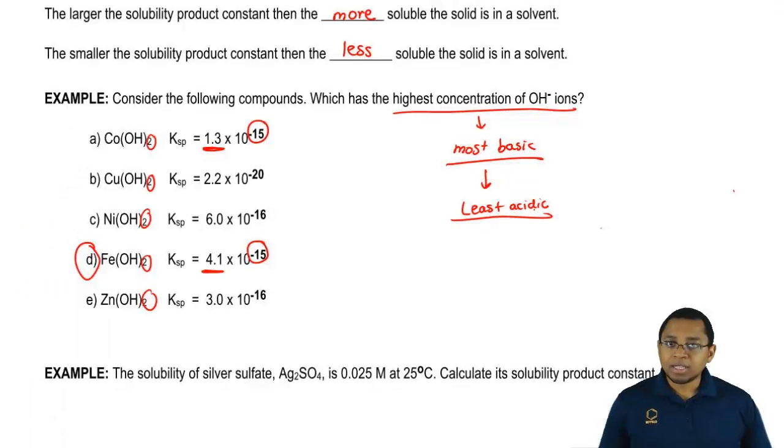And remember, because all of them had two OH-es, we didn't have to look at the number of ions. We only looked at the Ksp. If they had a different number of OH- ions, then we'd have to do calculations in order to find their molar solubility which is X and we'll learn how to do that a little bit later on. All right.